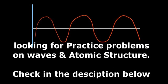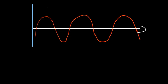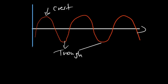Waves can be longitudinal or transverse. Looking at the transverse wave to define its properties: consider the x-axis line to be the neutral or rest point. As the wave travels, the top part we call the crest, and the lower part we call the trough. The crest is the highest point and the trough is the lowest point.